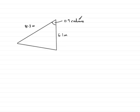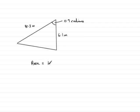Remember, radians can be written as either 0.9 with a little superscript c, or just simply left as 0.9. So if we've got to work out the area of this triangle, the area is equal to half the product of the two sides — so we've got 8.3 times 6.1 — multiplied by the sine of the included angle, which is the 0.9 radians.